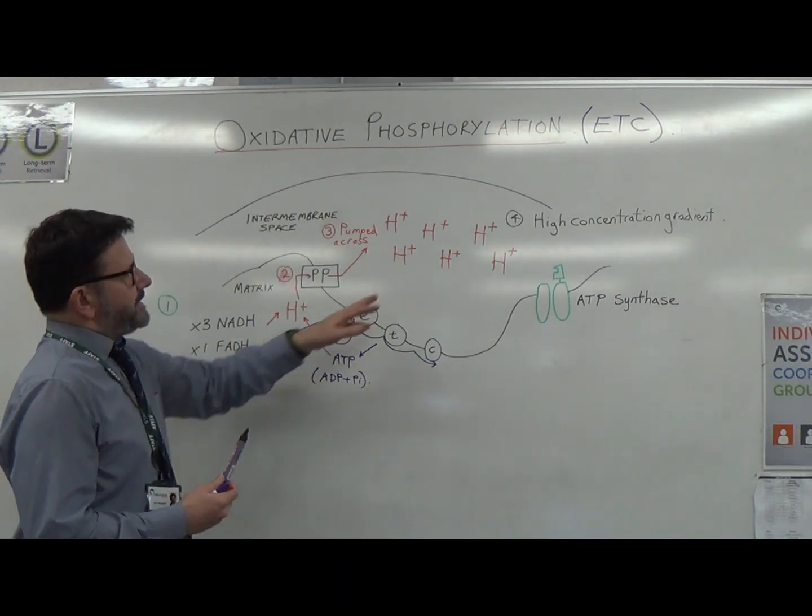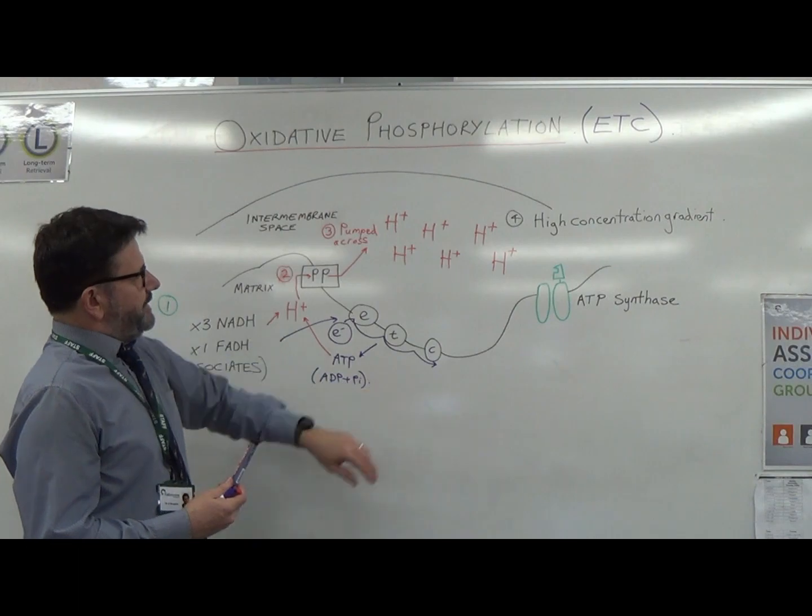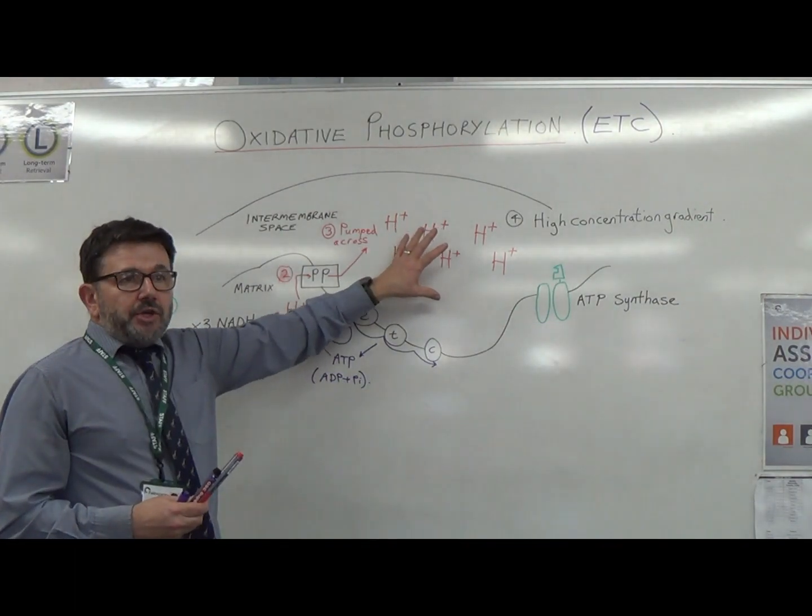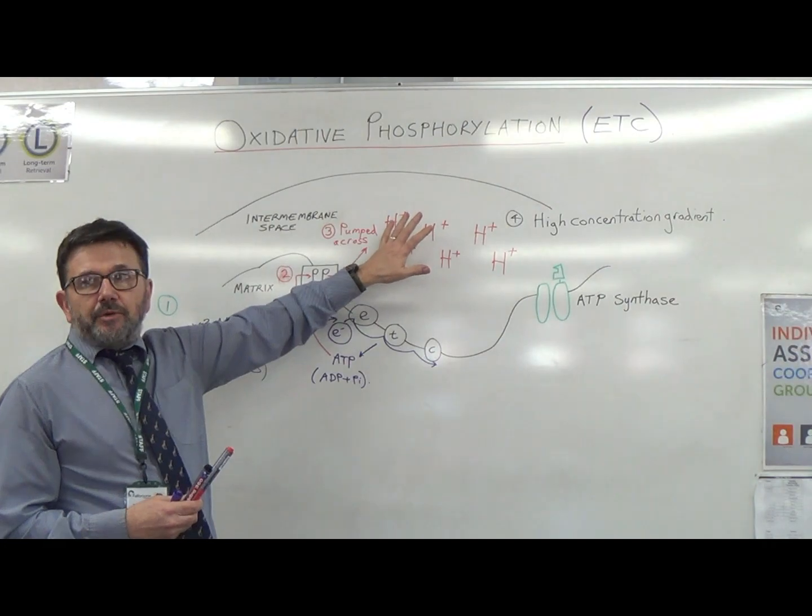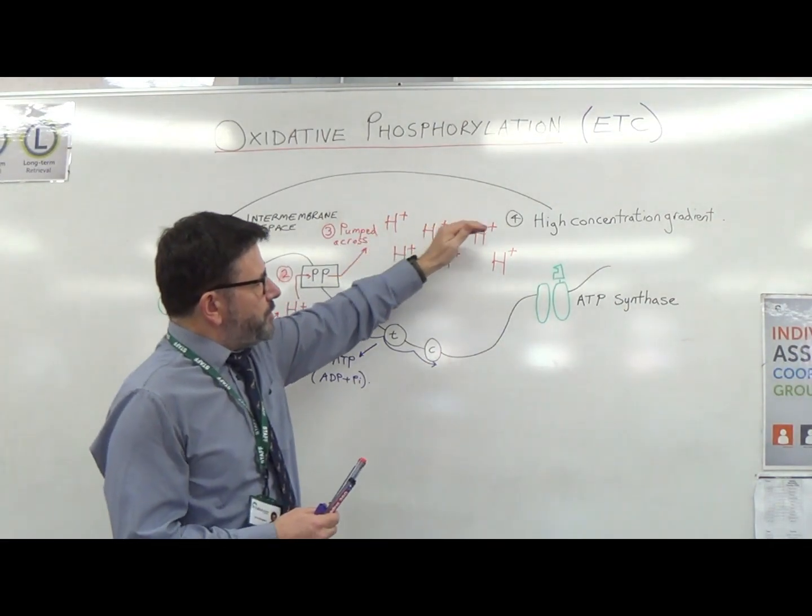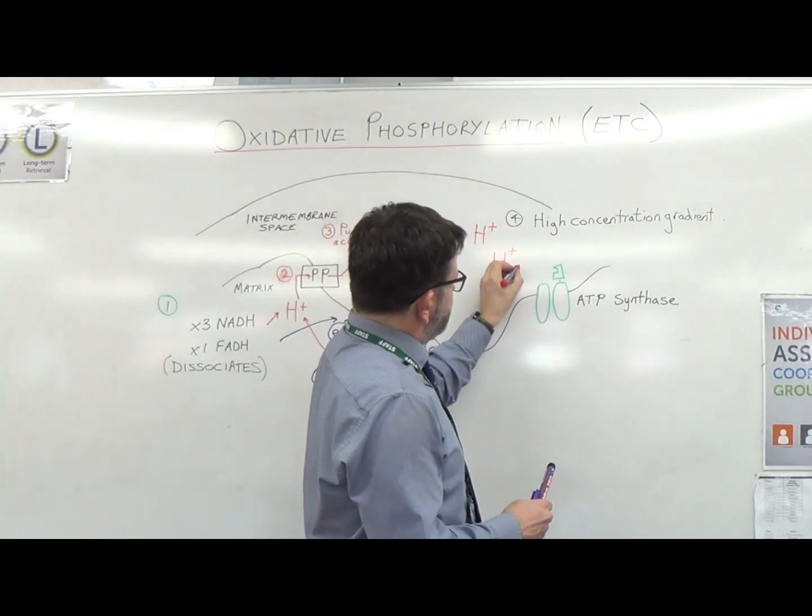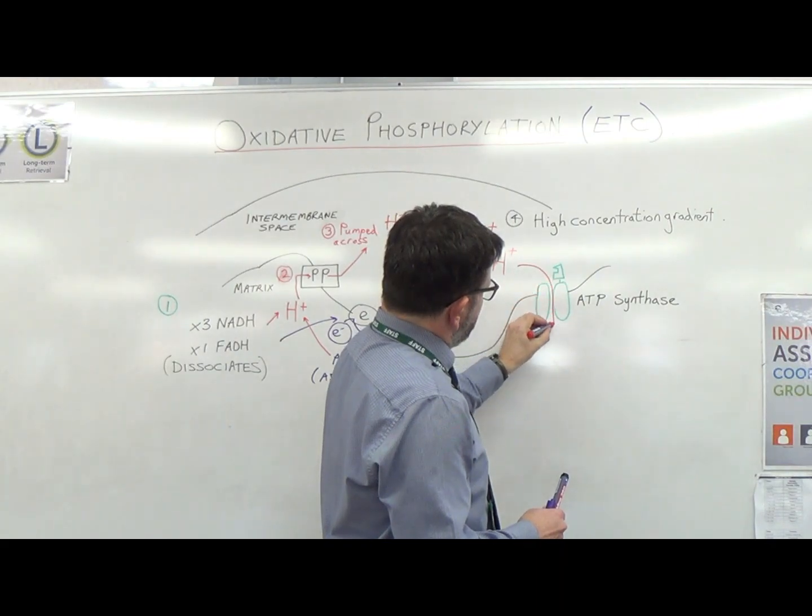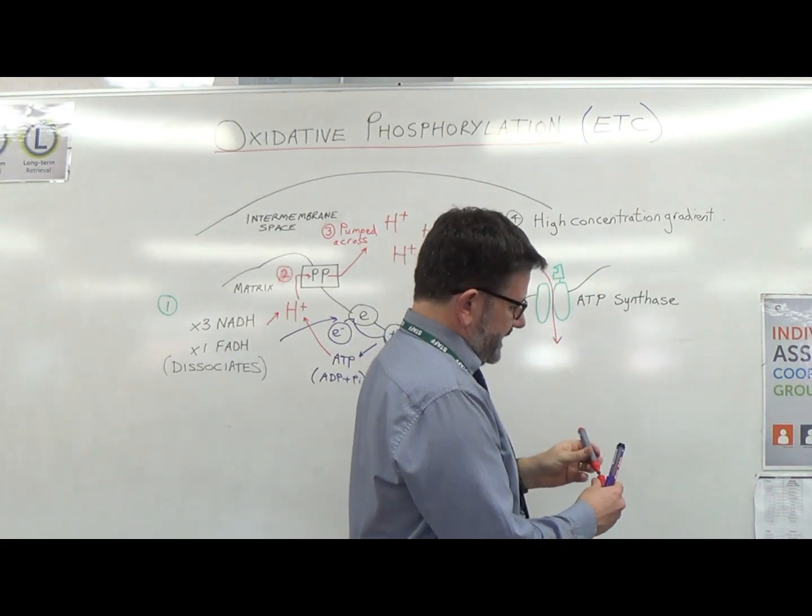You've got a high concentration gradient occurring—more hydrogens in the intermembrane space, or hydrogen ions as you say, in the intermembrane space than in the matrix. The hydrogen ions, because it's a higher concentration gradient, can then move through ATP synthase by facilitated diffusion.